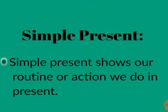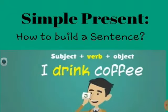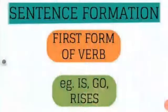Let's come to the topic Simple Present Tense. Simple Present shows our routine or action we do in the present. How to build a sentence in Simple Present Tense? Subject plus verb plus object. For example: I drink coffee. Here 'I' is the subject, 'drink' is the verb, and 'coffee' is the object. In Simple Present Tense, the sentence formation includes the first form of the verb.